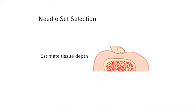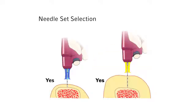Press your thumb or finger over the insertion site to estimate the depth of soft tissue. With the needle set tip touching the bone, the 5 mm mark must be visible above the skin for confirmation of adequate needle set length prior to drilling.